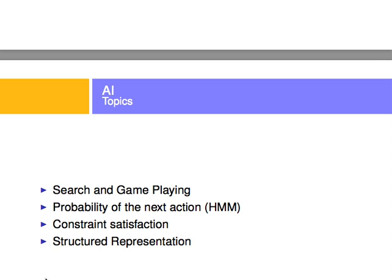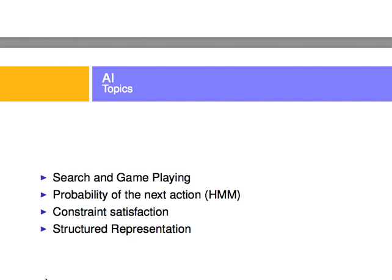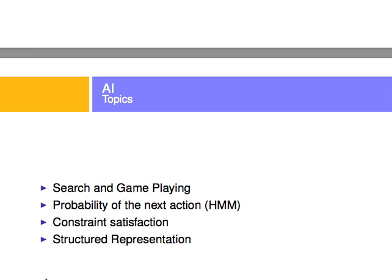Some topics in artificial intelligence you might find useful include: searching, game playing, probability of next actions, constraint satisfaction, and structure representation. These might seem unattainable at this introductory AI stage, but if you follow more videos or look them up, they will become more and more accessible.